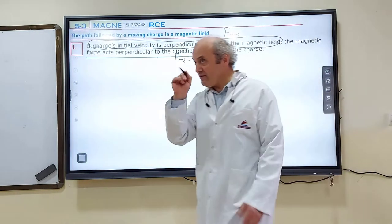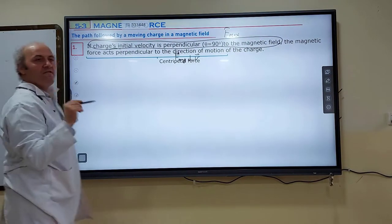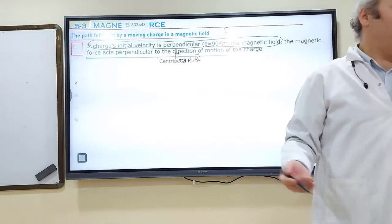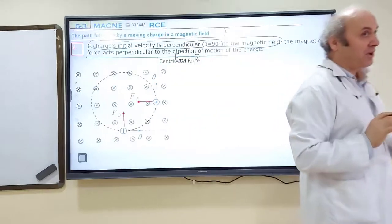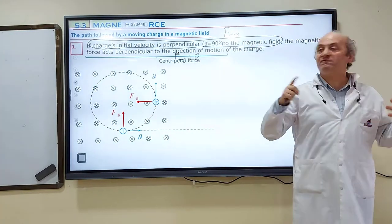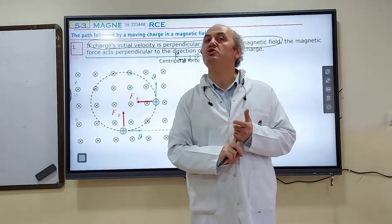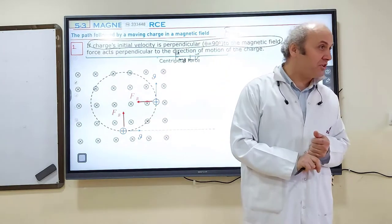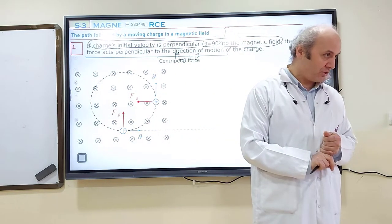In physics, any force which acts perpendicular to the direction of motion is called centripetal force. The magnetic force here is the centripetal force, and the particle must follow a circular path. If a charged particle is moving inside a magnetic field perpendicular to that field, it will follow a circle. Only the direction of motion will change, but charge speed cannot increase or decrease. Magnetic force will only be used to change the direction of motion.